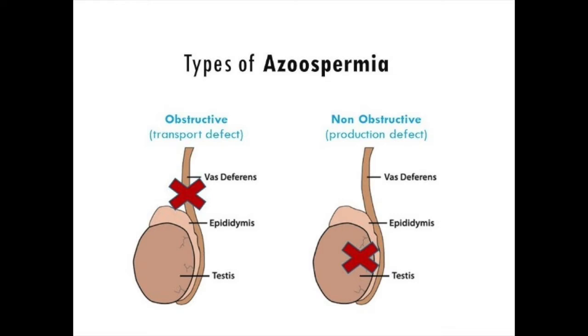If there are no sperms in the ejaculate then it is azoospermia. Azoospermia is of two types: obstructive and non-obstructive. Obstructive is where there is an obstruction in the transport of the sperms from the testes where they are formed to the ejaculate. Non-obstructive is where there is a defect in the production of the sperm in the testes.